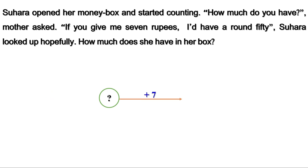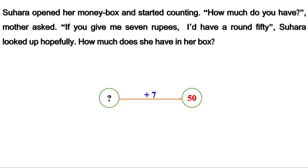So we can say, when 7 is added to her money, it is 50. We need the money with her — not the amount increased by 7 rupees — so we need to get the amount before adding 7 rupees. We have to cancel this effect. Suppose you have moved one step forward; to reach the previous position, you have to move one step backwards. Just like that, 7 is added to the amount and it is 50. We have to do the reverse operation — means subtract 7.